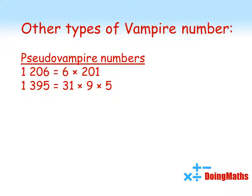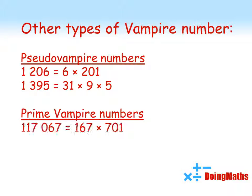They're pseudo vampire numbers. Now, really impressive ones are prime vampire numbers. For example, 117,067 is equal to 167 times 701. The same six digits, rearranged. But the clever thing with a prime vampire number is that those two fangs are prime numbers. So, they're also the two prime factors of the original one.